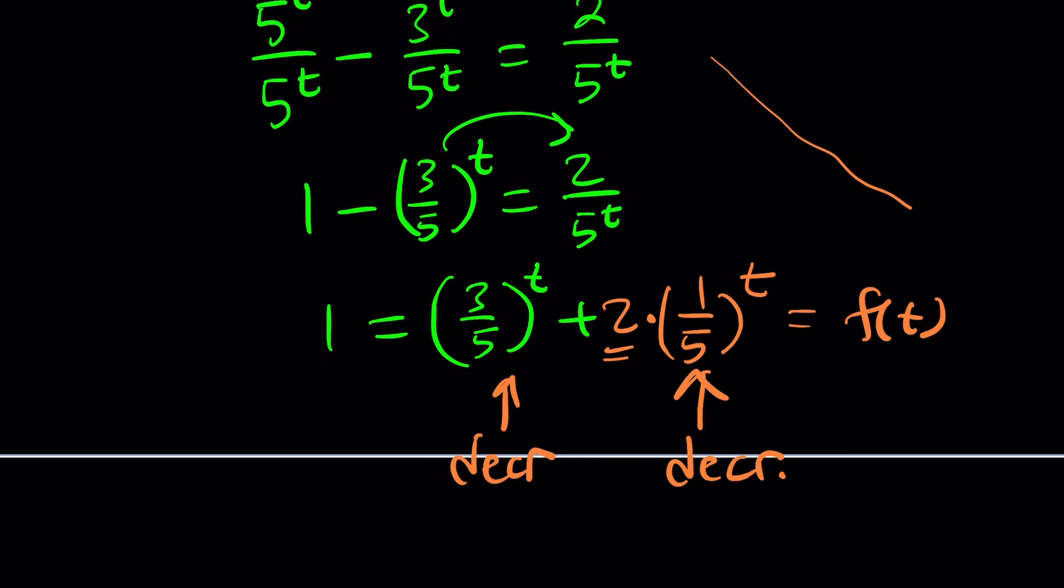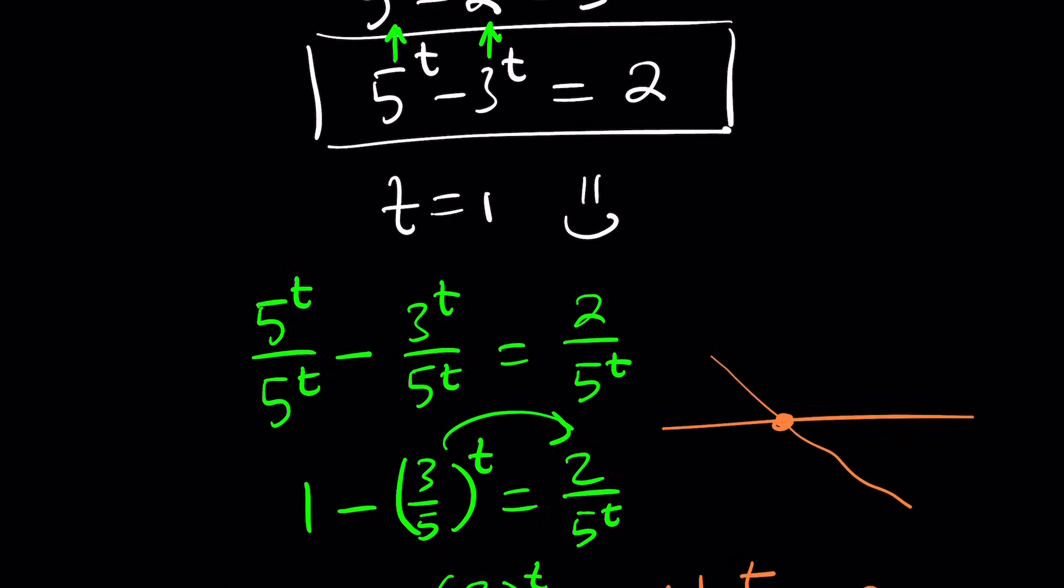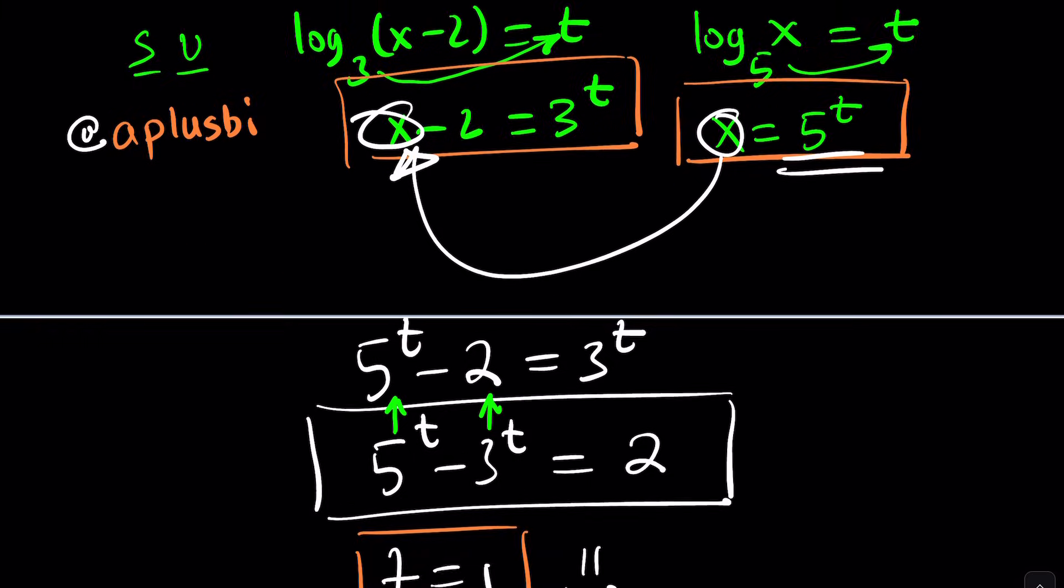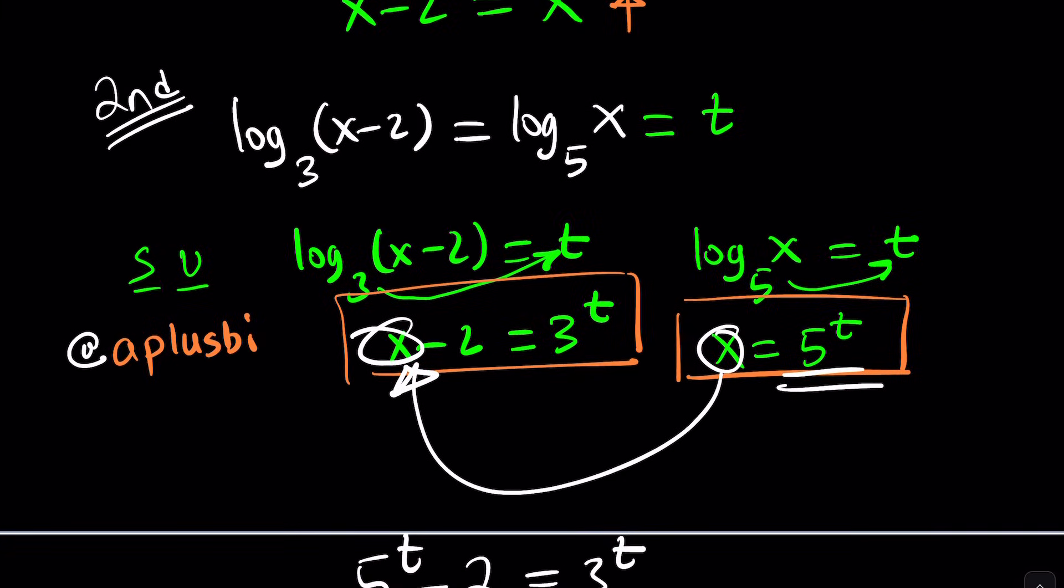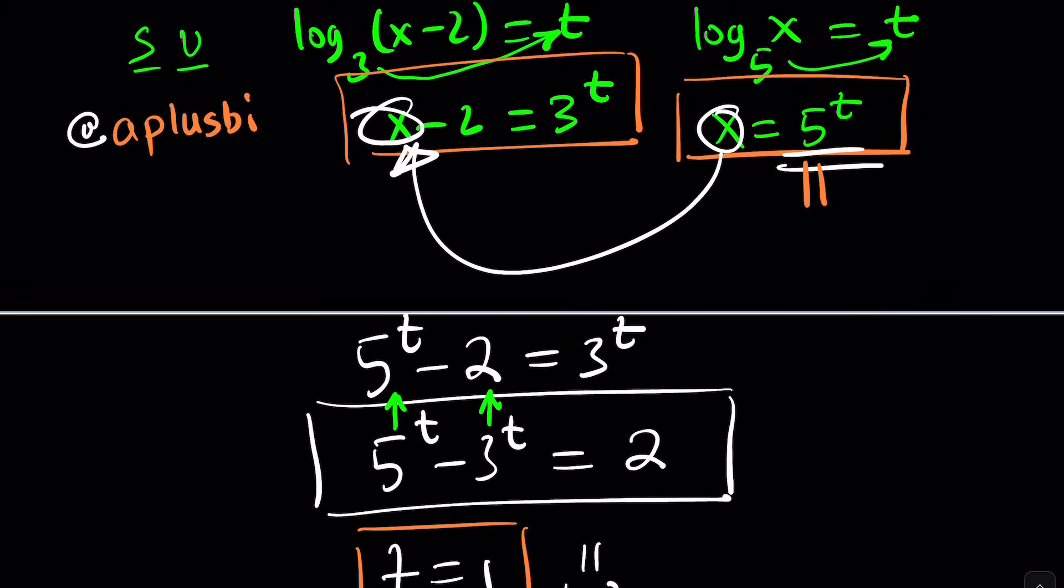You have a function that's decreasing and it's intersected by a horizontal line. That means they can only intersect at a single point. The only solution you found is the only solution. Therefore, t equals 1 is the only solution. But we're not solving for t. We're solving for x, and x equals 5^t.